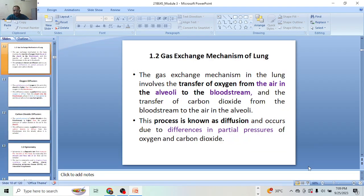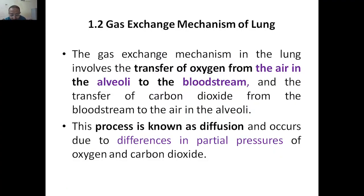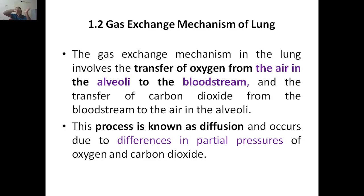Hello everyone, welcome to my YouTube channel. Today we are going to discuss gas exchange mechanism. Gas exchange usually happens whenever we take air — it goes from the trachea to the bronchi to the lungs, where we have bronchioles that lead to the alveoli. In the alveoli, gas exchange takes place. The alveoli are very close to the blood capillaries, so oxygen in the alveoli goes to the capillaries and carbon dioxide in the capillaries comes back to the alveoli, then out through the bronchioles, trachea, and nose. That is how inhalation and exhalation take place.